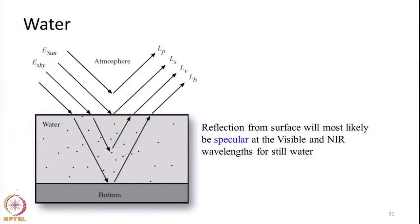When we take water, the reflectance that we observe from water bodies can take several different paths. Let us look at this particular slide. If you take the radiance, let us assume the sensor is located here. The radiance reaching the sensor from a water body can come from different paths. The first thing can be just the pure path radiance from the atmosphere — we are not interested in this.